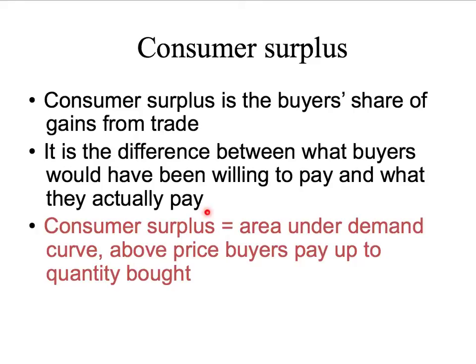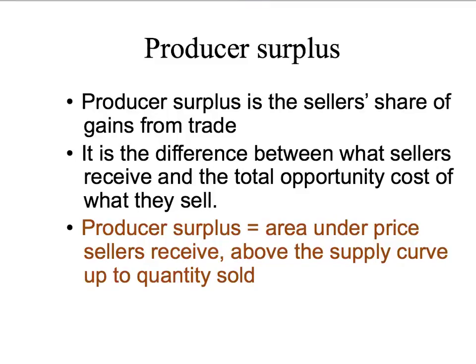We've worked out how to calculate consumer surplus: it's simply the area under the demand curve, above the price that buyers pay, up to the quantity that they purchase. We know that producer surplus is the seller's gains from trade — it's the difference between what the sellers receive and the total opportunity cost of what they sell. It's the area under the price sellers receive, above the supply curve, up to the quantity that they actually sell.